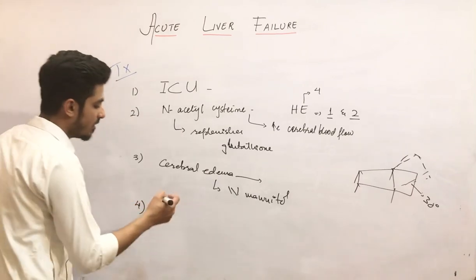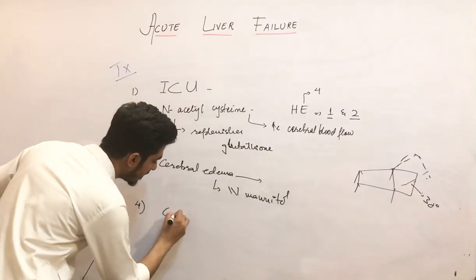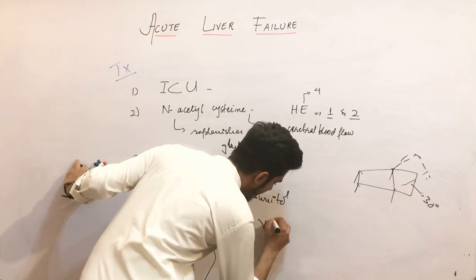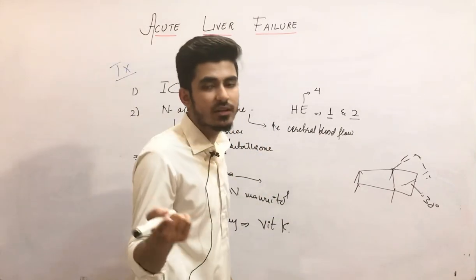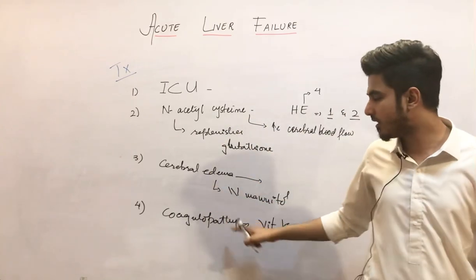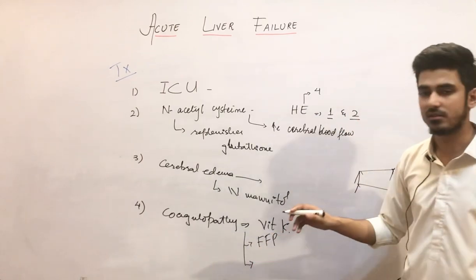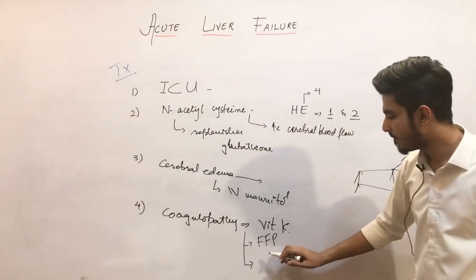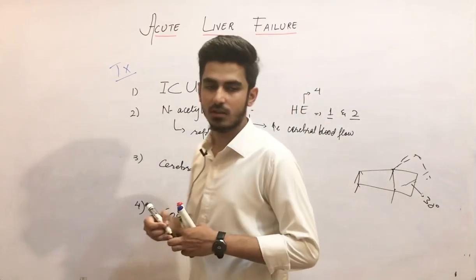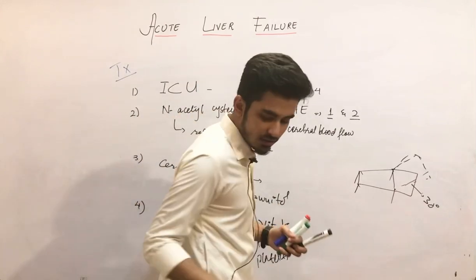The fourth problem is coagulopathy — the clotting factors are deficient and there is a bleeding tendency. Coagulopathy is treated by giving vitamin K, because certain clotting factors are dependent upon vitamin K. We also give fresh frozen plasma, which contains substances helpful in clotting, and we can also give platelets to help stop or prevent bleeding.